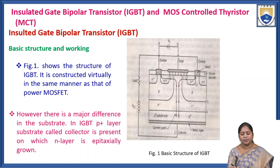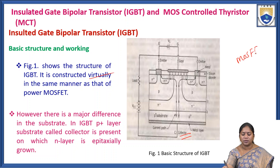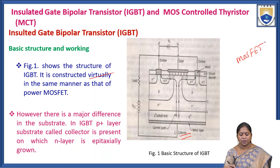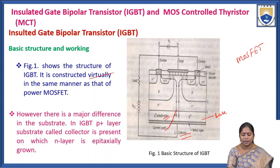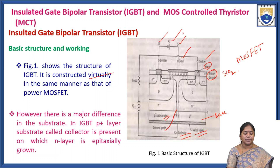The basic structure of the IGBT is shown in figure 1. It is constructed virtually in the same manner as a MOSFET. Here the P+ layer is the substrate, used as the base region. The current path and metal layers include the emitter, metal, silicon dioxide (SiO2), gate terminal, and gate voltage.